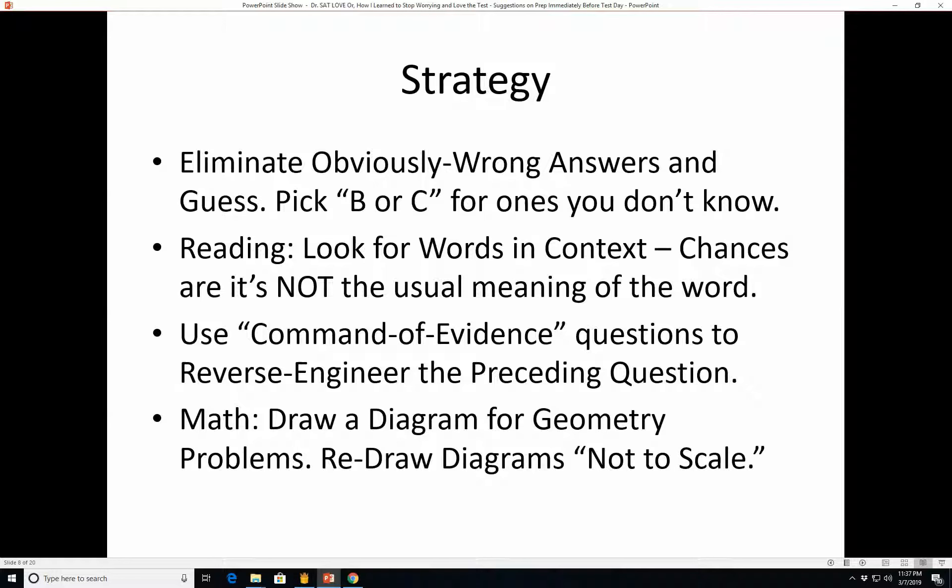Strategy. You want to eliminate obviously wrong answers and guess. Pick B or C for ones you don't know. Reading. You want to look for words in context. Chances are it's not the usual meaning of the word, so just go back to the line that they say. Read around it a few lines. You should be able to figure it out. You want to use the command of evidence questions where they say which of the following provides the best evidence for the answer to the previous question. You can use that to reverse engineer the previous question. If you don't know the answer to it, you can go and look at the command of evidence question answers and see which one of those actually gives you a clue as to what the first question's answer is.